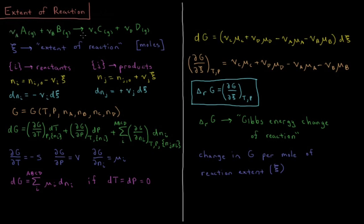The stoichiometric coefficients are νA, νB, νC, and νD. We're going to define a new quantity called ξ — the Greek letter xi — which is a kind of super squiggly E, even more squiggly than epsilon. This is called the extent of reaction, and its unit is typically moles.